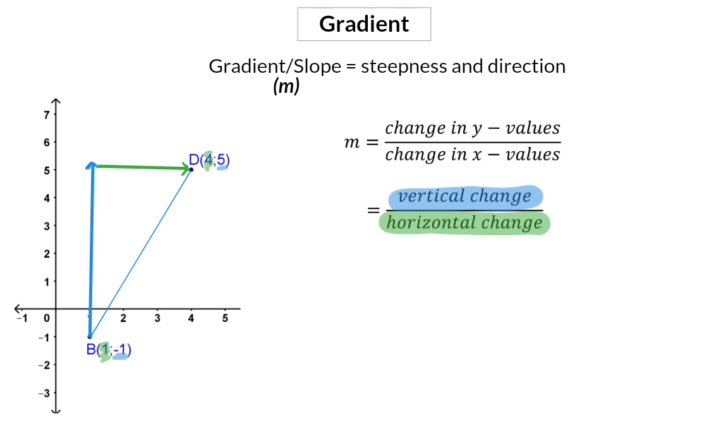And to get these changes we need to determine the difference between the two y values and the difference between the two x values. And that is why we can use the formula y2 minus y1 over x2 minus x1.